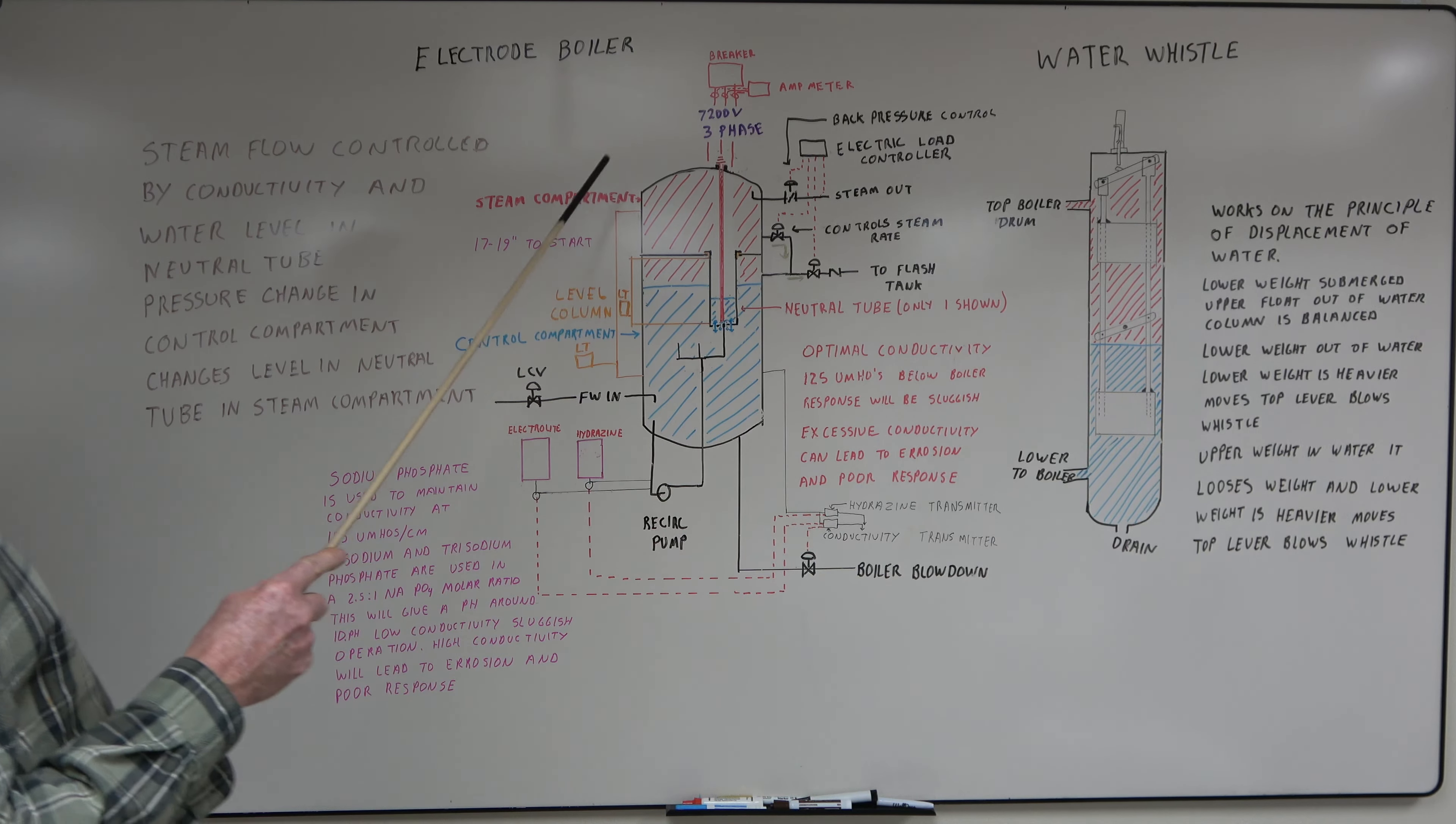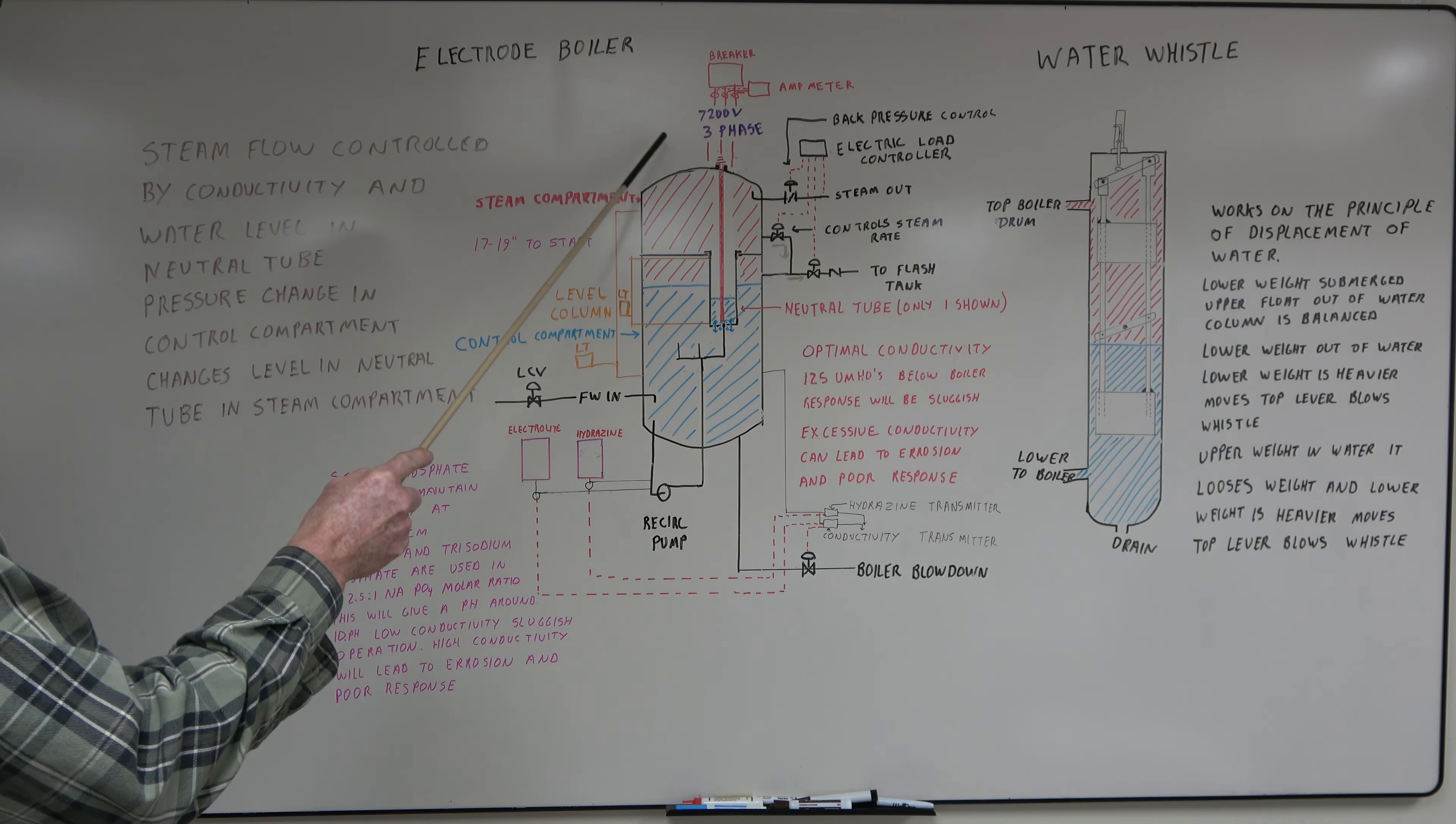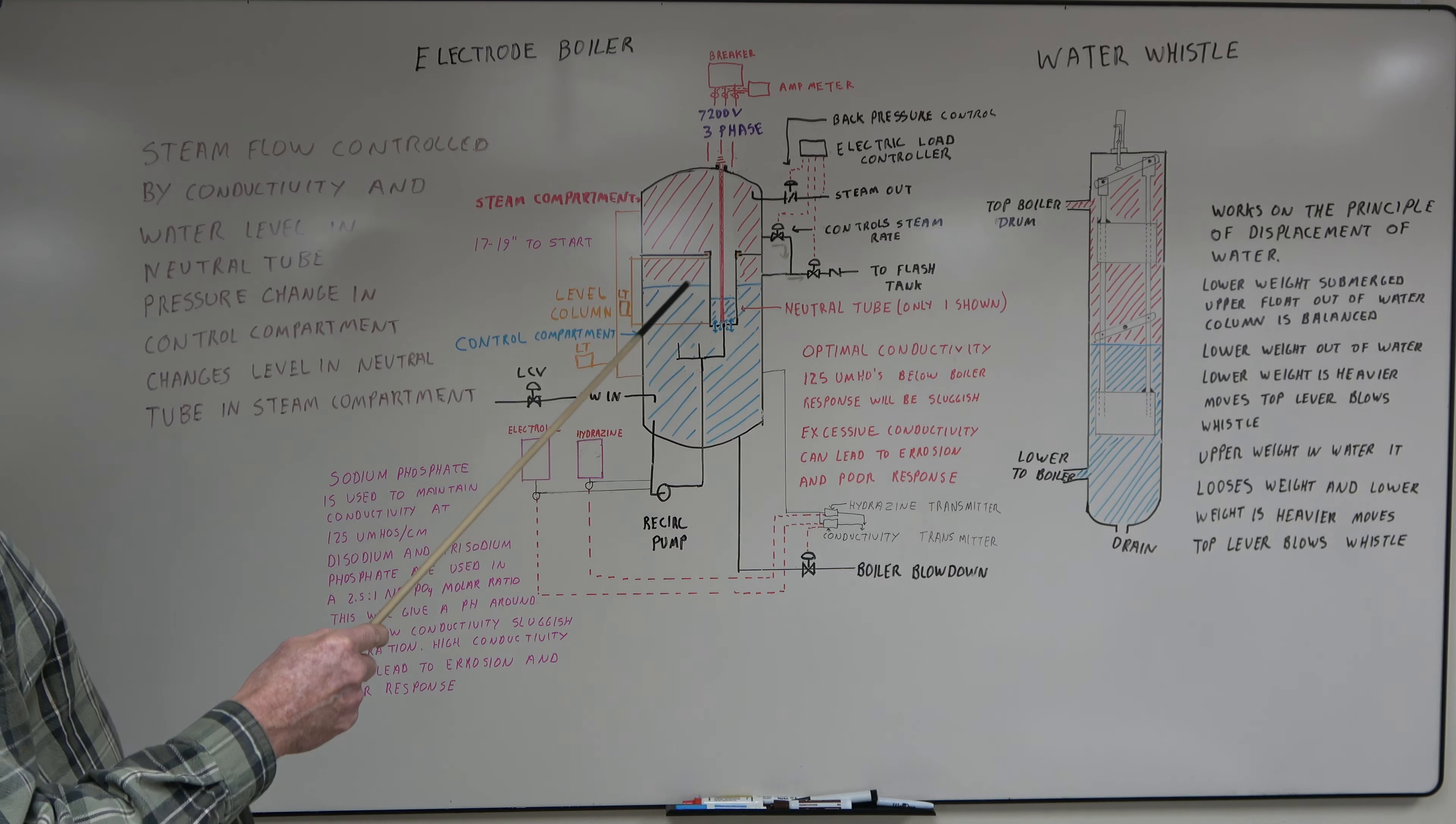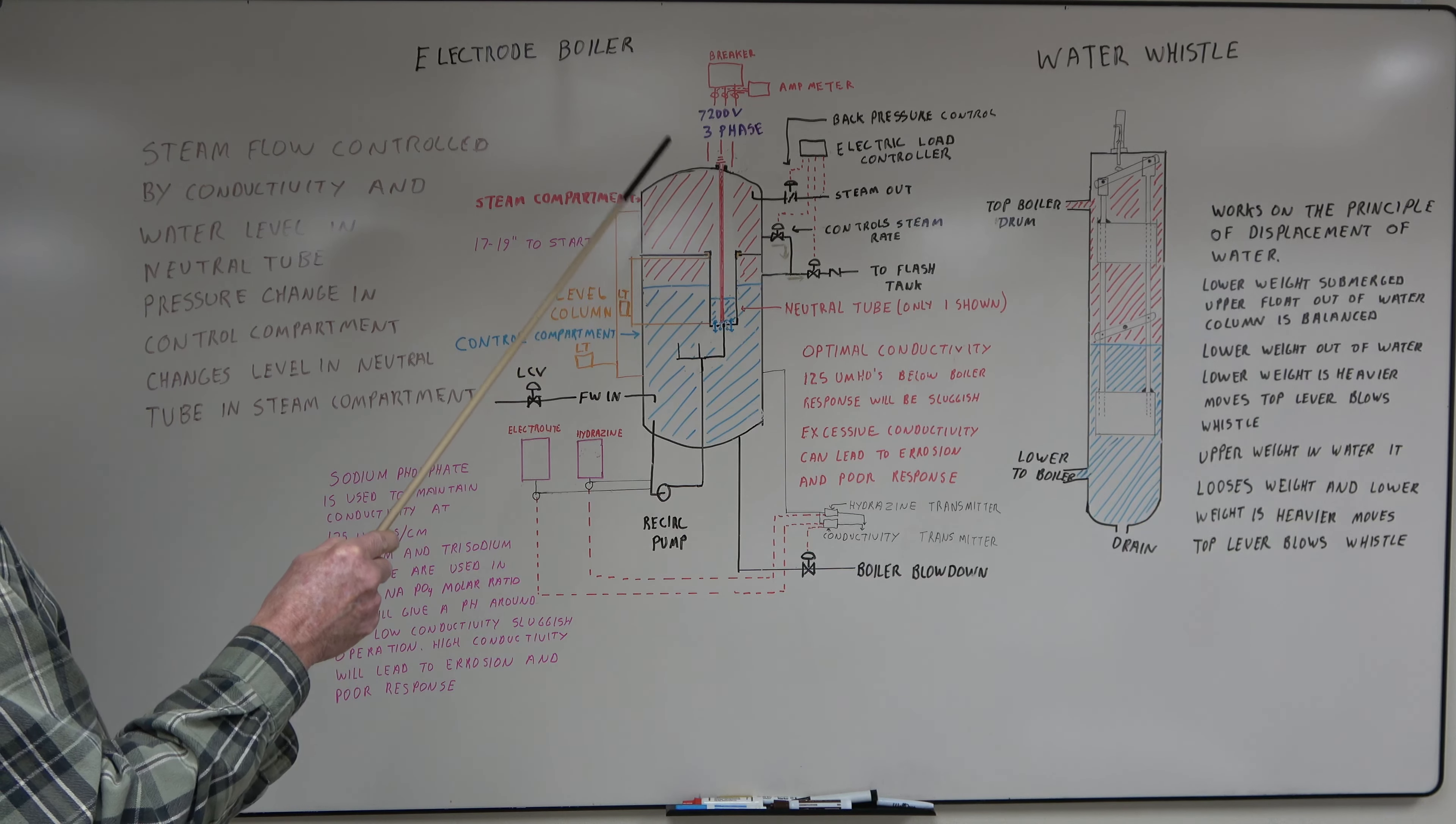The whole key to electrode boiler, they come straight across the line. You have a breaker and amp meters. That's it. There's no current control. This one ran 7200 volts, three phase, but about 10 megawatts. There's all kinds of different capacities of these.